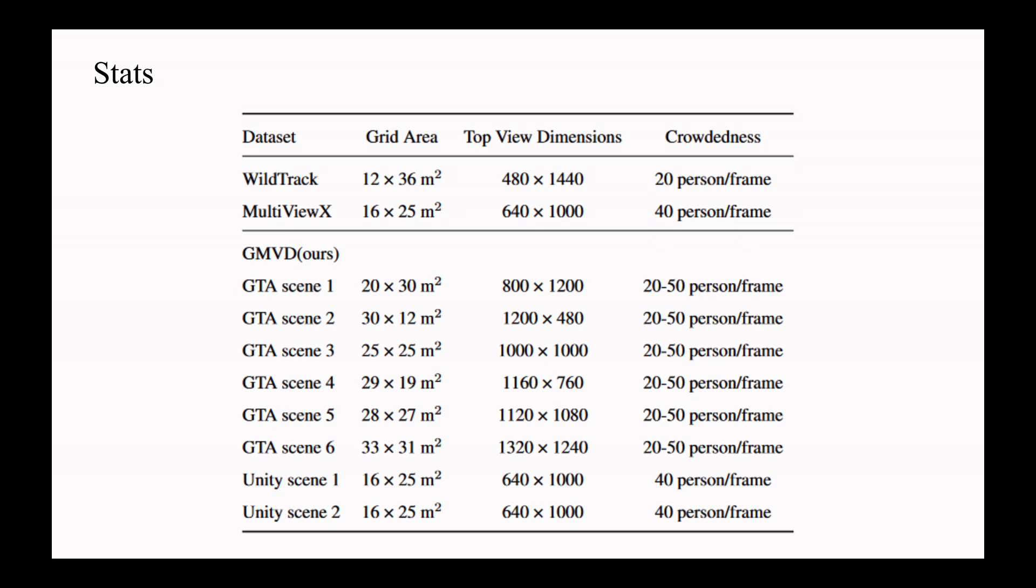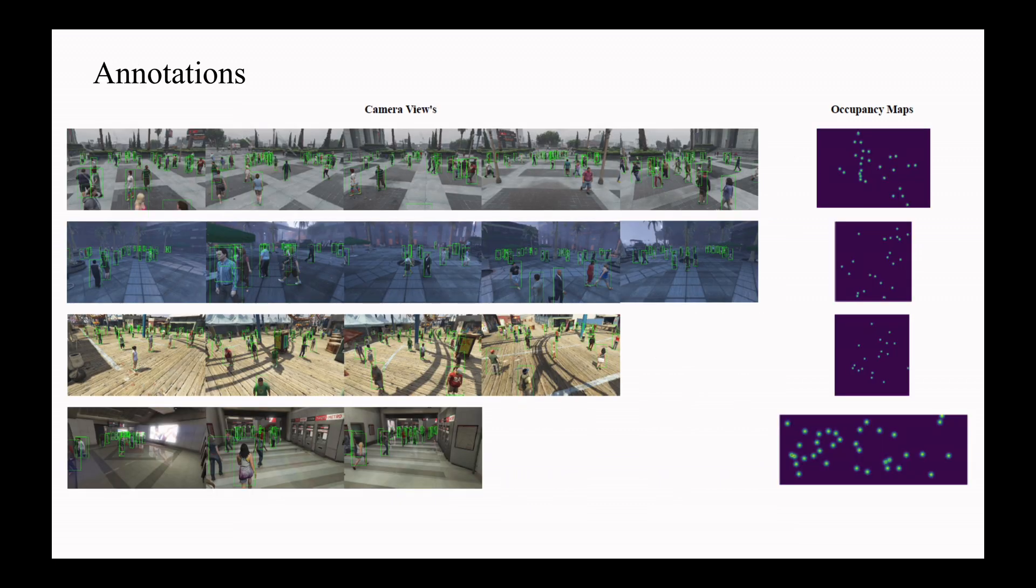This table shows the comparison of our dataset with existing ones based on top view grid area in meters, the top view occupancy map dimension, and the crowd density which is ranging from 20 to 50 persons per frame. With synchronized camera calibration, the ground truth annotations are provided in terms of 2D bounding boxes in their respective camera view and the corresponding 3D location in top view occupancy map.